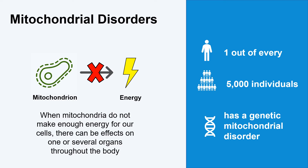Mitochondrial disorders can be present at birth or develop at any time in an individual's life. Mitochondrial disorders are often genetic, meaning they are a result of certain changes in our genetic material called variants that impact how the gene works in our body. It is estimated that one out of every 5,000 individuals has a genetic mitochondrial disorder, making mitochondrial disorders rare. There are two main ways that genetic variants can affect how our mitochondria work: variants in the mitochondrial DNA or variants in our nuclear DNA.